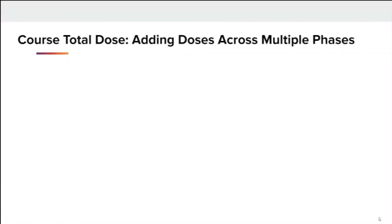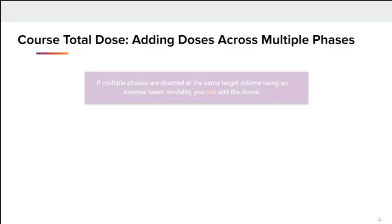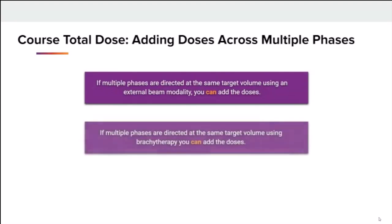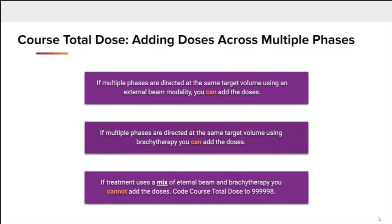Radiation course total dose identifies the total cumulative dose of radiation administered to the patient across all phases during first course treatment. Doses should only be summed across phases to create a total dose when all of the phases were delivered using the same major modality type and targeting the same volume. If phases were delivered using two or more different major modalities — for example, external beam and brachytherapy to the same body site — then code 99998. This is because there is no agreed upon standard for summing doses across different radiation modalities. It's also important to note you should never add doses across different target volumes. When the phases target different volumes, the total dose recorded is the highest dose delivered to any one phase. Doses are added across phases only when they are attributed to the same target volume.